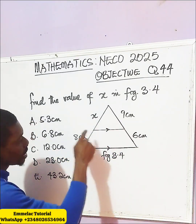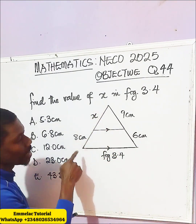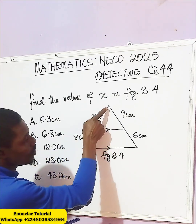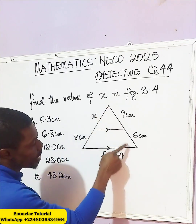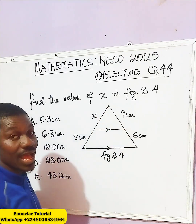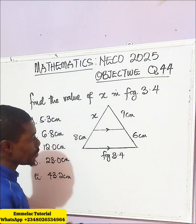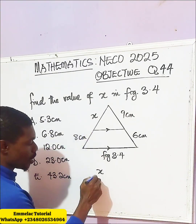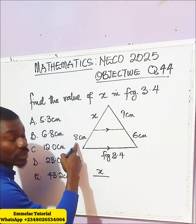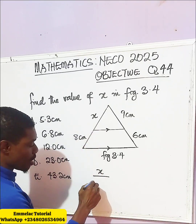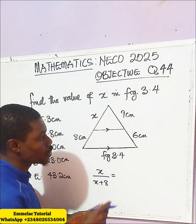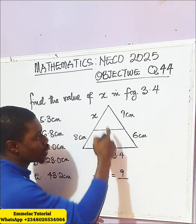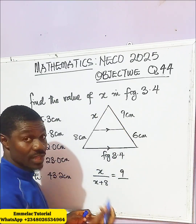How do we resolve this? From here to here is x, so from here to here is the sum of 8 and x. From here to here is 9, and from here to here is the sum of 9 and 6. So we have x over (x plus 8), which equals 9 over 15.